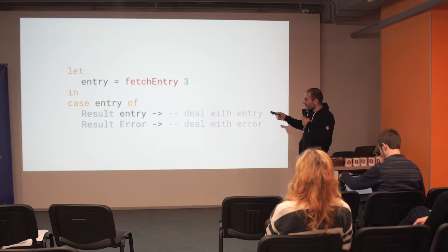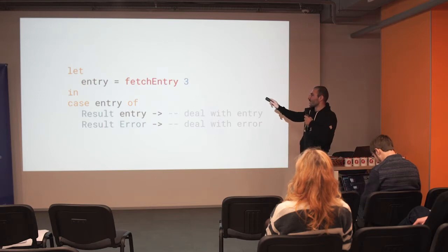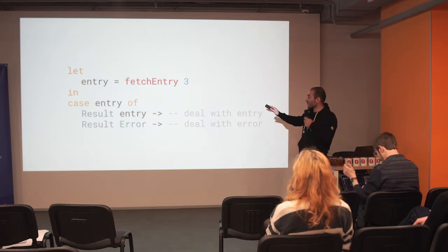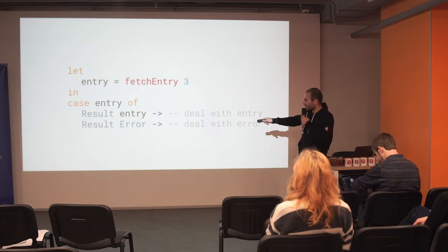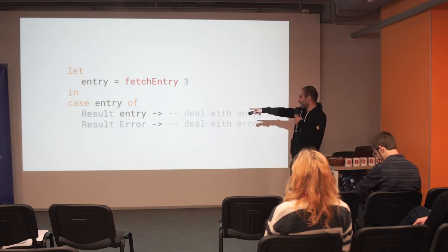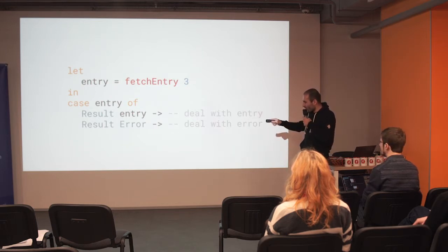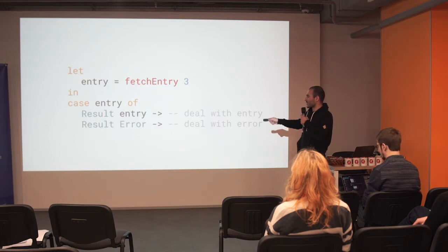What is important about this example is that if you try to compile this in a strictly typed functional language, it will work and it will cover all the problems you have. But if you try to avoid the second case — the result-error case — it will fail to compile. It will make you compile this stuff with all the cases covered. You have to have all the checks in place.